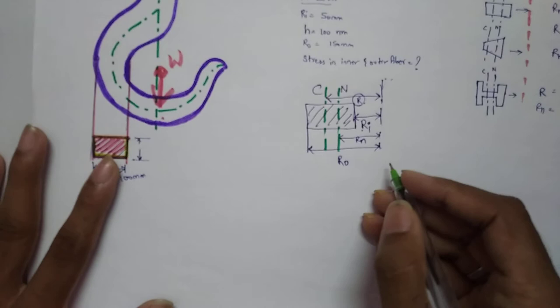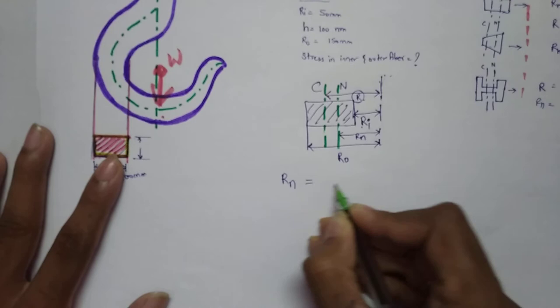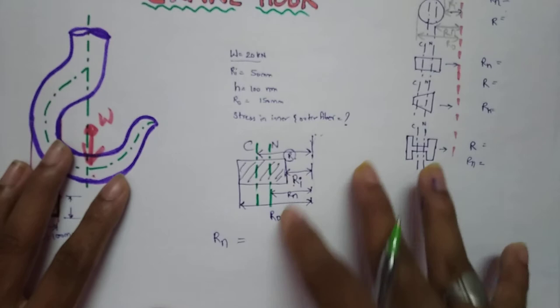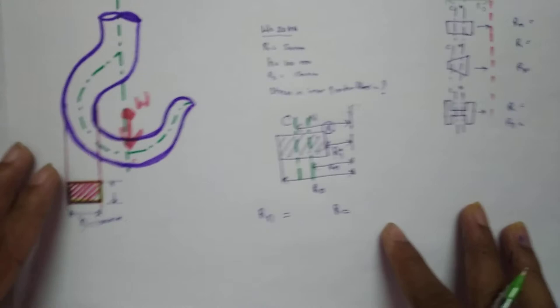For each cross section there will be different formulas for R_N and R. For rectangular cross section it will be different; for circular, tapered, and I-section the R_N and R values will be different, which we will find in our machine design data book.